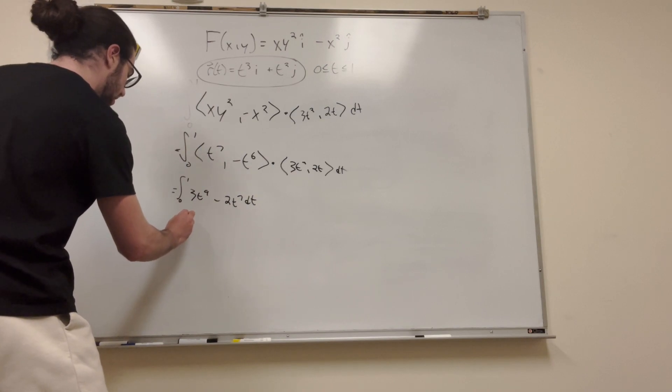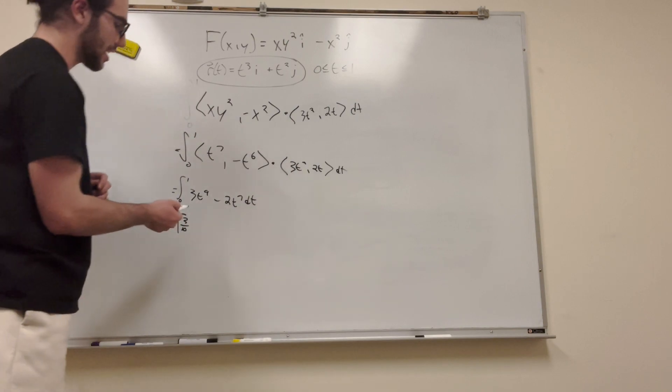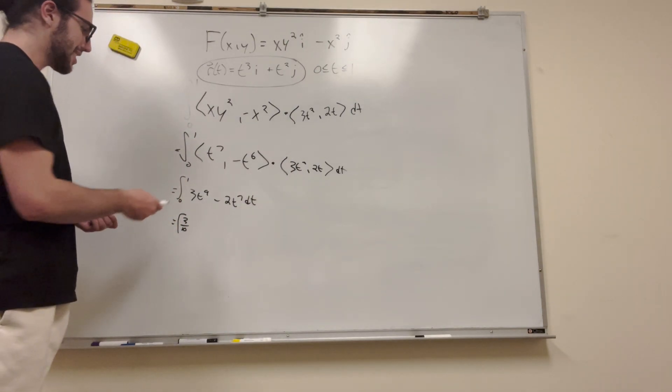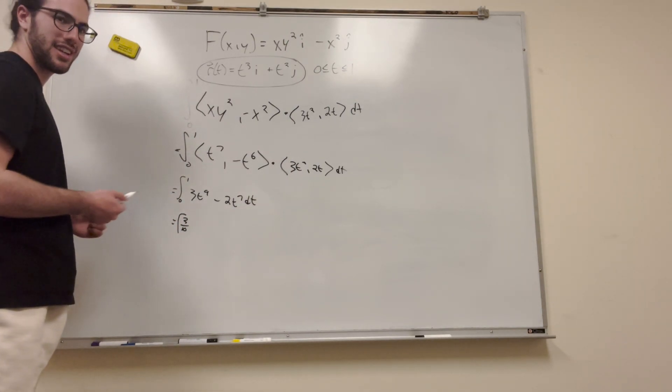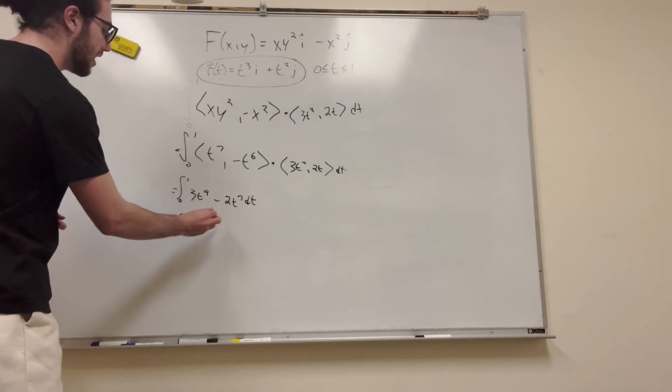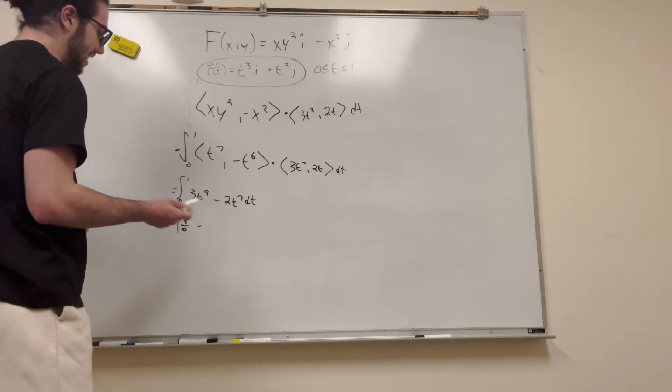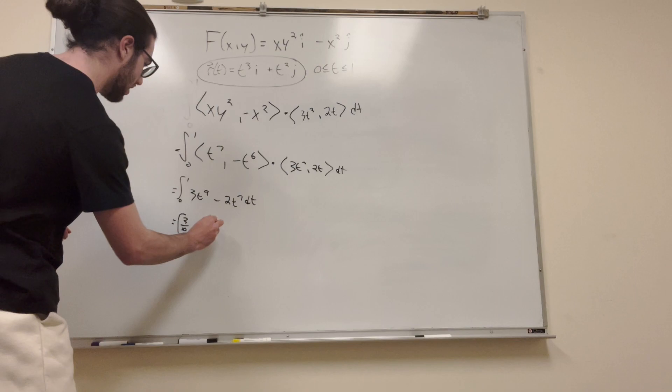This is equal to 3 over 10 times t to the tenth. So, it's going to be t to the tenth, but as you can see, this is what I like to do. I just see that goes from 0 to 1. So, obviously, t to the tenth is going to be 1, t to the zeroth is going to be 0. So, it's just going to be 3 tenths minus, same thing over here, to the eighth. 1 to the eighth is 1, minus 0. So, it's going to be minus 2 eighths.